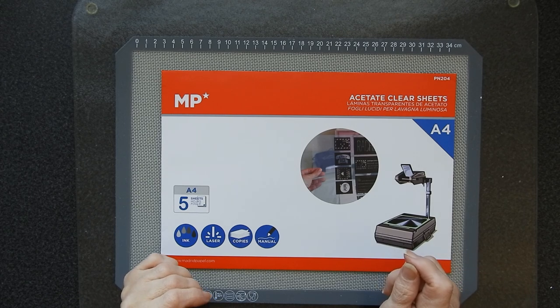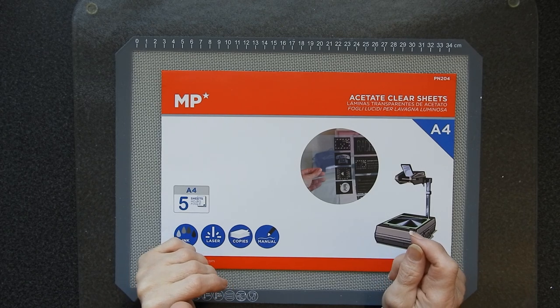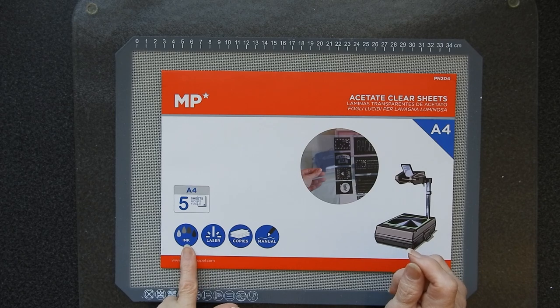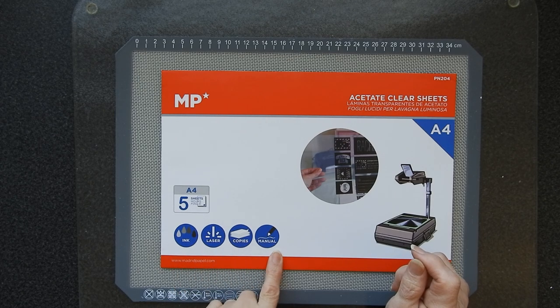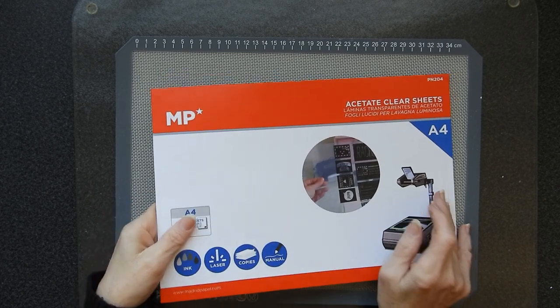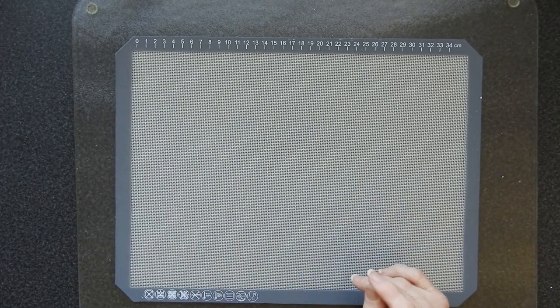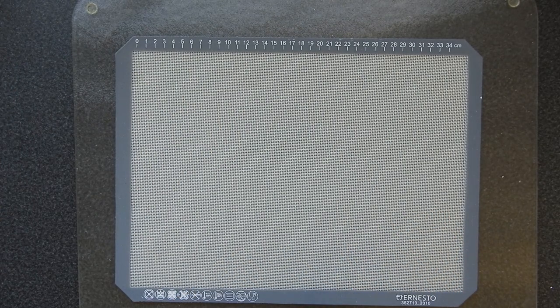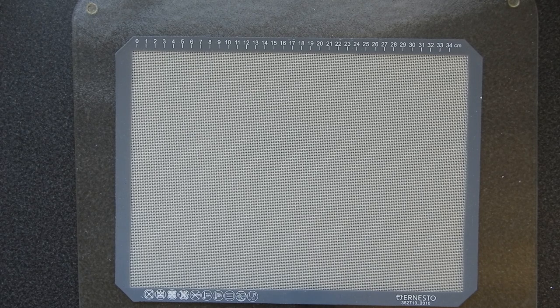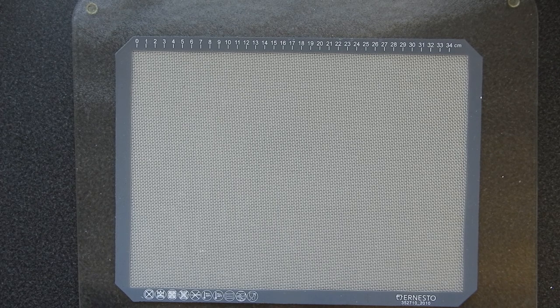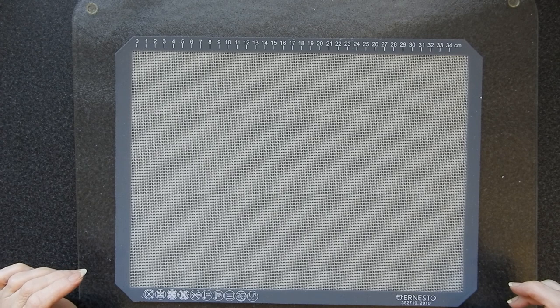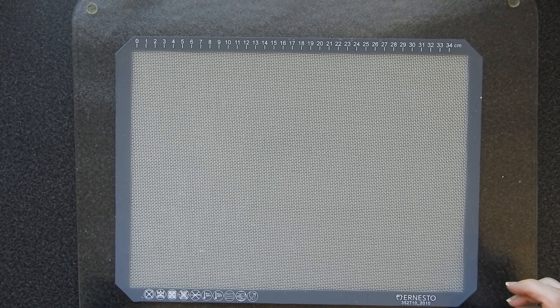If you have an inkjet printer, have you ever tried printing on acetate? This acetate says ink laser copies manual. Nope. My inkjet is a Canon EcoTank inkjet. It will not print on that stuff. It just doesn't want to know. It beads up, it won't dry, it won't print on it. But I still want it to print on acetate. It has its uses.